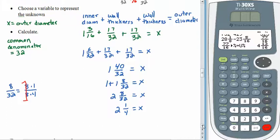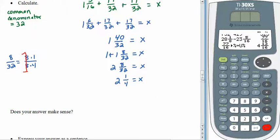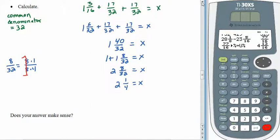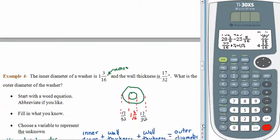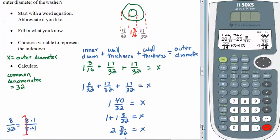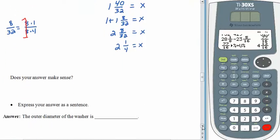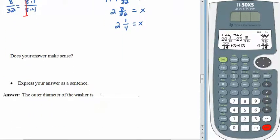Does our answer make sense? 17 thirty-seconds is a little bit more than half, so a little bit more than half plus a little bit more than half gives us a little more than 1, and 1 and 1 is 2 plus some extra — so this is a very sensible answer. The last thing, of course, is to put this in a sentence so we don't forget the units: the outer diameter of the washer is 2 and 1 fourth inches.